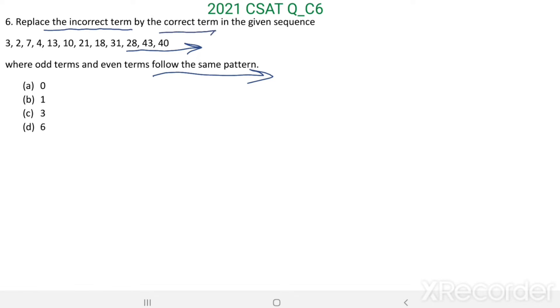So for that, first we write the odd term series: 3, 7, 13, 21, 31, 43. Then even terms: 2, 4, 10, 18, 28, and 40.